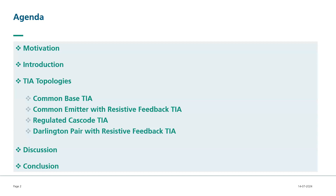Here is a brief outline of what I will cover in today's presentation. I will start with the motivation behind this research followed by an introduction. I will also discuss the importance of Transimpedance Amplifiers and review various TIA topologies, then delve into specific topologies such as common base, common emitter with resistive feedback, regulated cascode, and Darlington pair with resistive feedback. Then we will move on to the discussion concluding with the conclusions, and finally the floor is open for some questions.